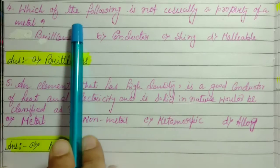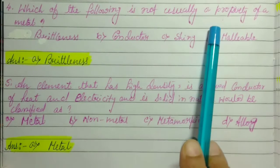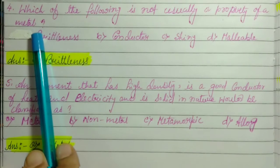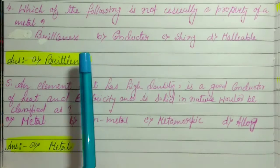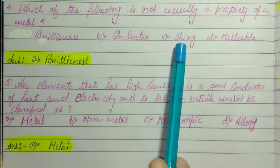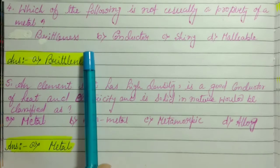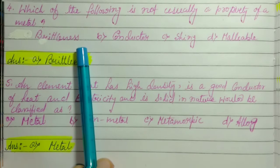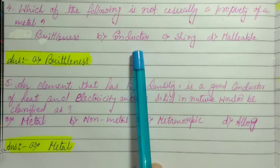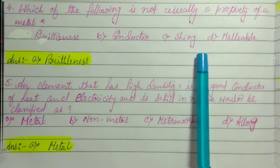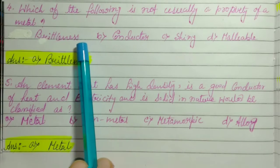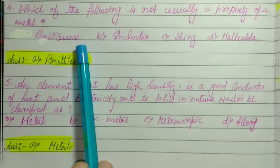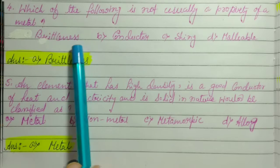Number 4: Which of the following is not usually a property of a metal? The options include brittleness, conductor, and malleable. Brittleness means something that is soft and easily breaks. Metals are solid and do not break easily, so the correct answer is brittleness — that is not a property of metal.